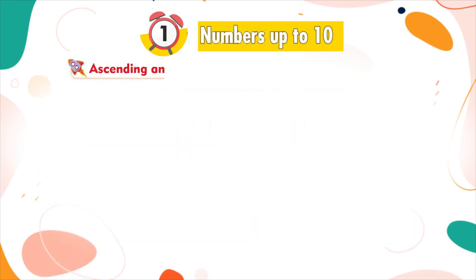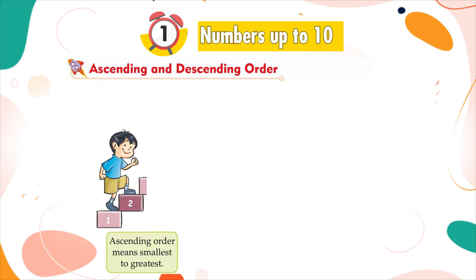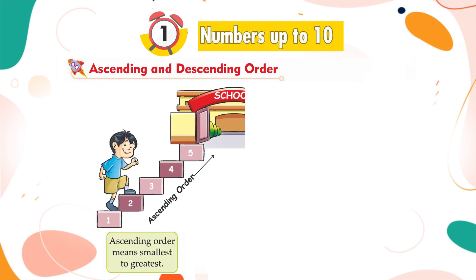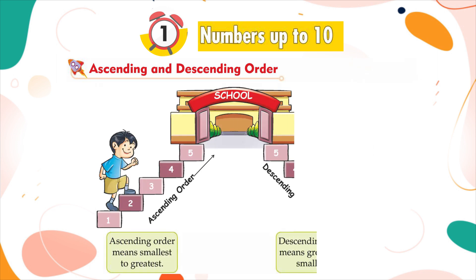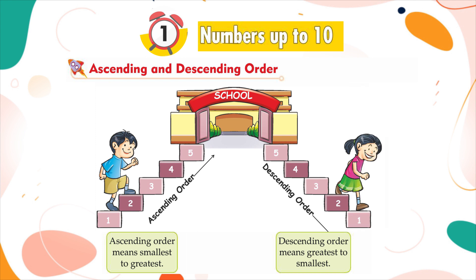Ascending and descending order. Ascending order means smallest to greatest. Descending order means greatest to smallest.